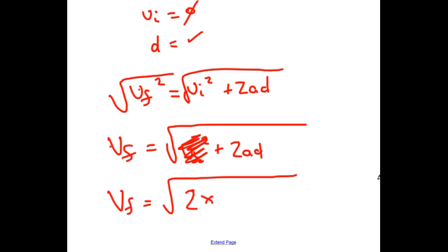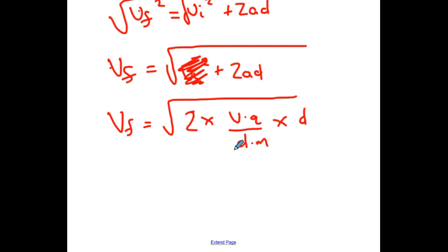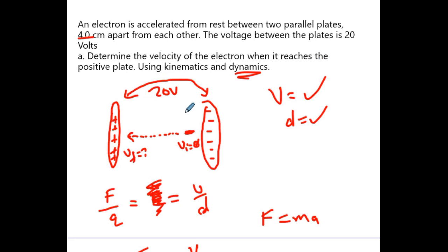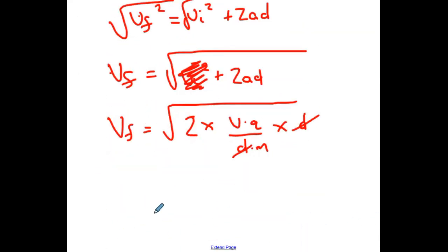The formula for final velocity becomes vf = √(2VQ/M). Notice that the distance actually cancelled out! This comes back to something I discussed at the beginning of the lesson — there is a uniform field between the plates. The field is the same strength regardless of where you are: here, here, or here, the field is actually the same amount. So the distance actually didn't even matter.